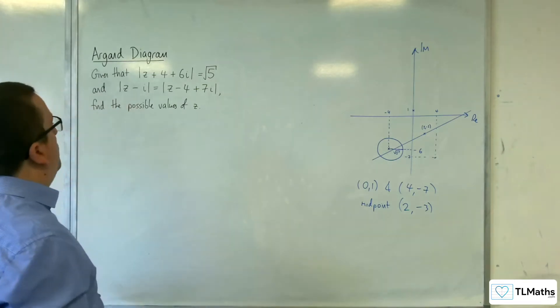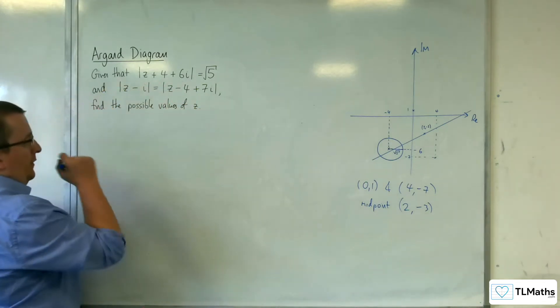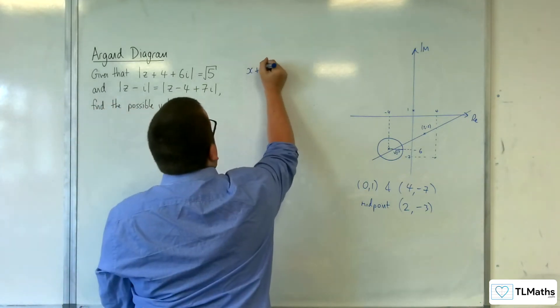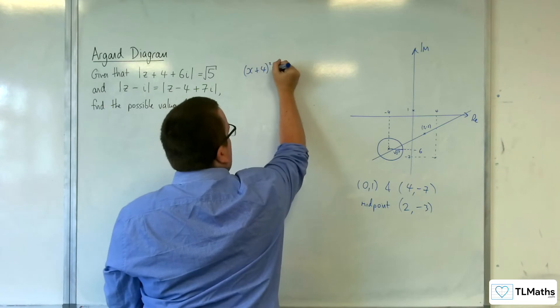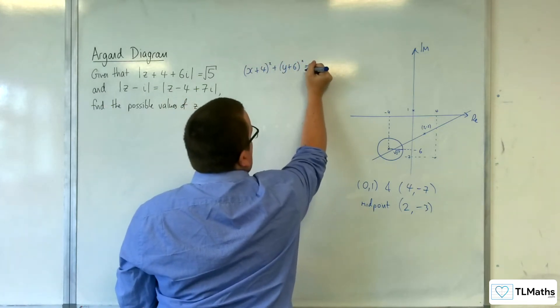So that would be my route through here. So first of all I want to get the equation of that circle. So our circle equation will be x plus 4 squared plus y plus 6 squared is equal to 5.